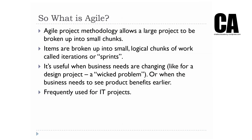Agile project methodology allows a large project to be broken up into smaller chunks. Items are broken into small logical chunks of work, and we call these iterations 'sprints'. It's useful when you've got problems like design — a wicked problem with multiple stakeholders, where design ideas keep changing, or where the business needs to see benefits a lot earlier. Agile methodology is frequently used for information technology projects.